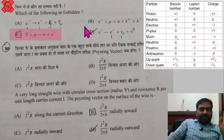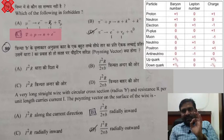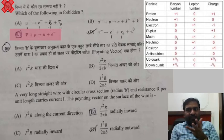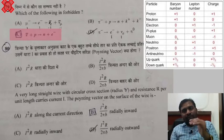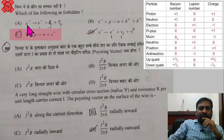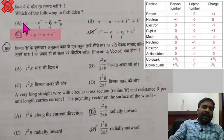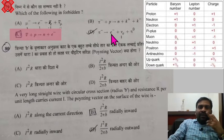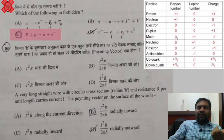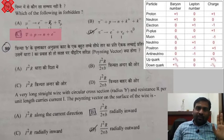Question 79: Which of the following reactions is forbidden? We check baryon number and lepton number conservation. For lepton number, electronic, muonic, and tauonic leptons are tracked separately. In option B, the left side has lepton number +1 but the right side has an anti-muon neutrino giving −1 — not equal, so it is forbidden. In option D, the right side has two leptons (electron and electronic neutrino) but the left side has none — also forbidden. Since multiple options appear forbidden, this question is considered wrong.